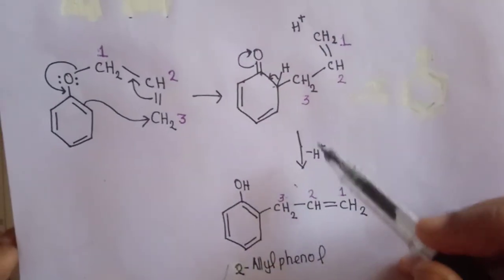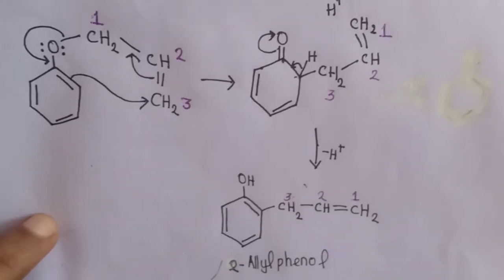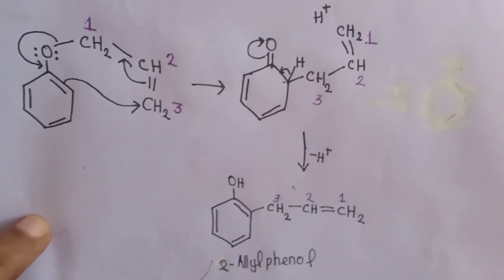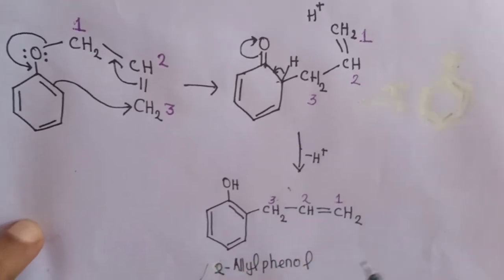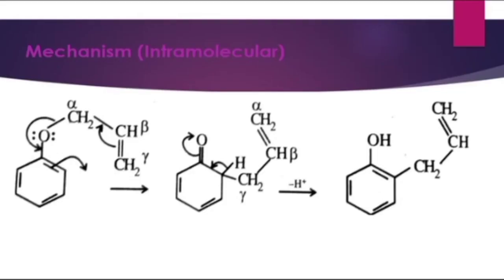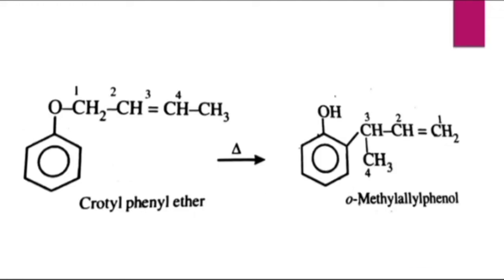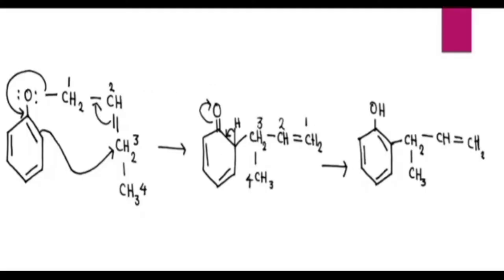Then a double bond forms, this double bond shifts towards oxygen, and this negatively charged oxygen attracts H+ to form an O-H bond. Finally, we get ortho allyl phenol as the product — that is, 2-allyl phenol. We can see that there is an inversion of the allyl group during rearrangement. Now let us check another example: crotyl phenyl ether. When crotyl phenyl ether is heated to about 200 degrees Celsius in the absence of any catalyst, it undergoes Claisen rearrangement to give ortho-methyl allyl phenol.